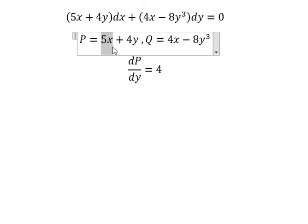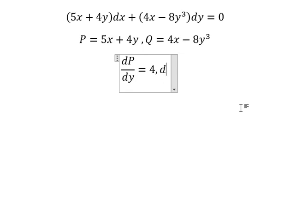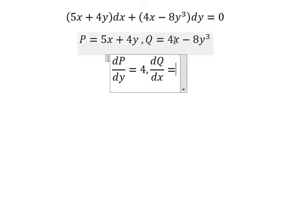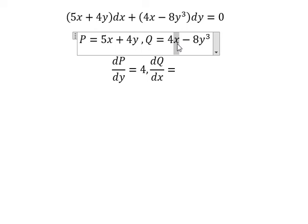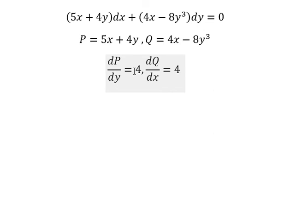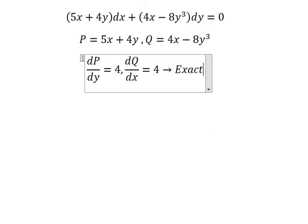We have DY, so we do first the derivative of Q with respect to X. This one we do first the derivative of X, you get about number one. So we have number four. We see that number four equals to number four, so we can confirm this is exact.